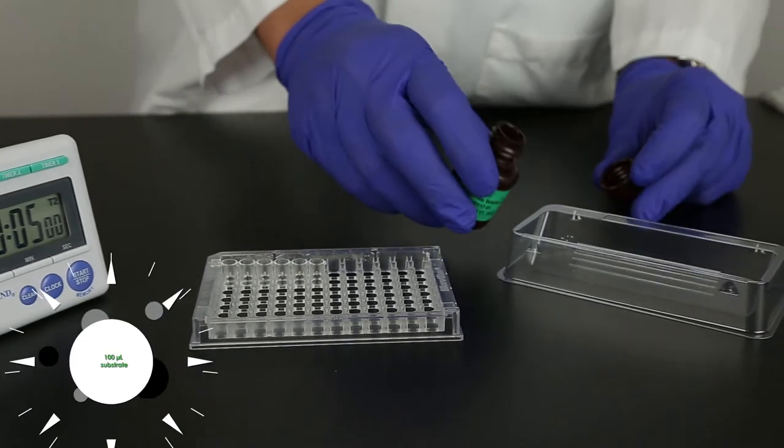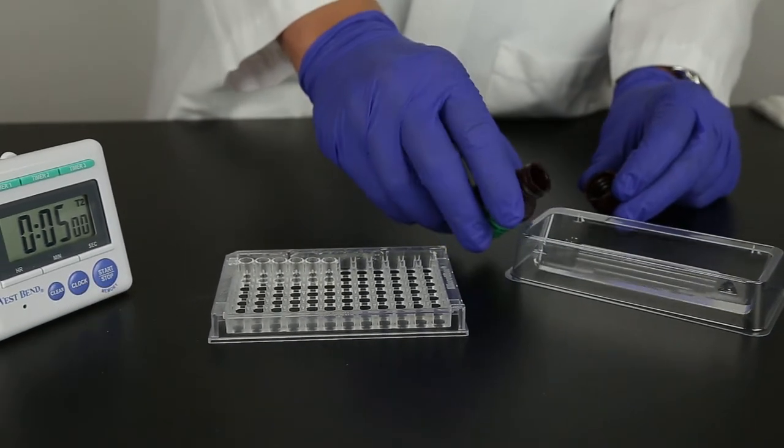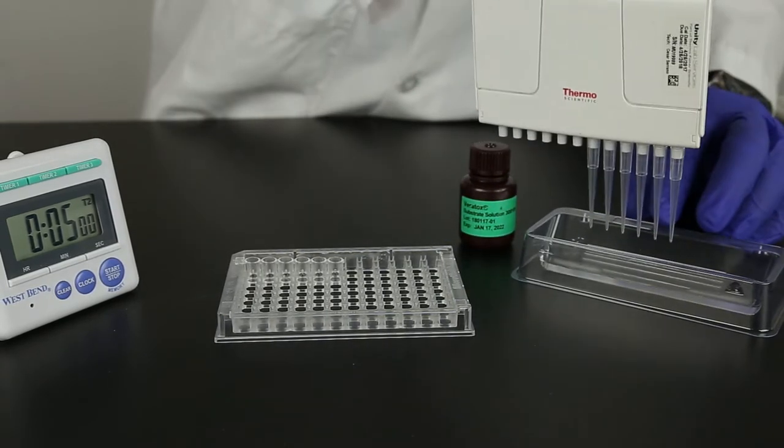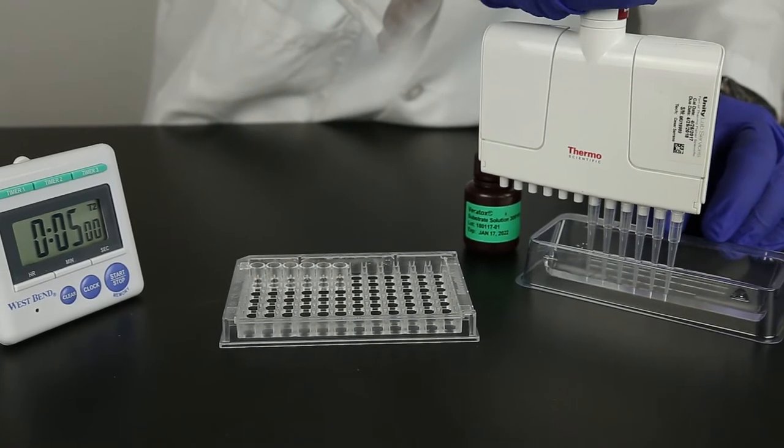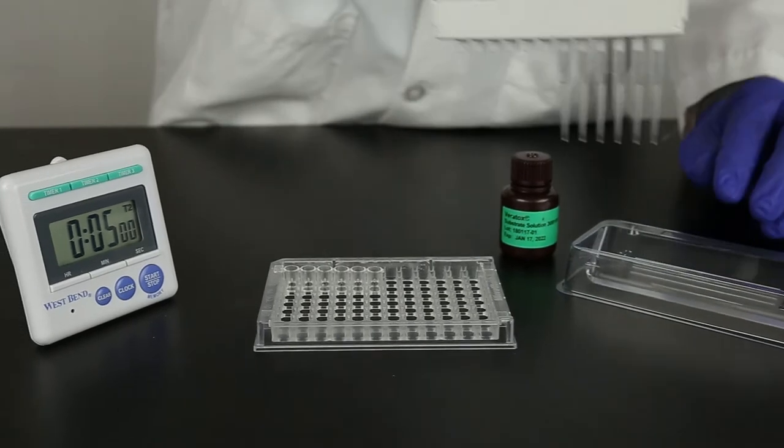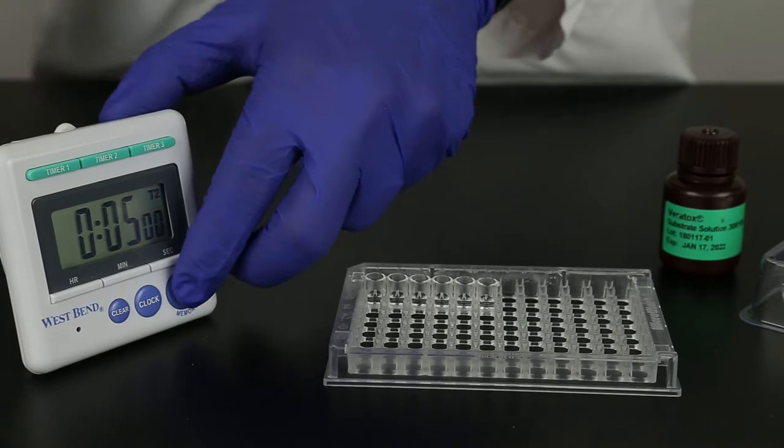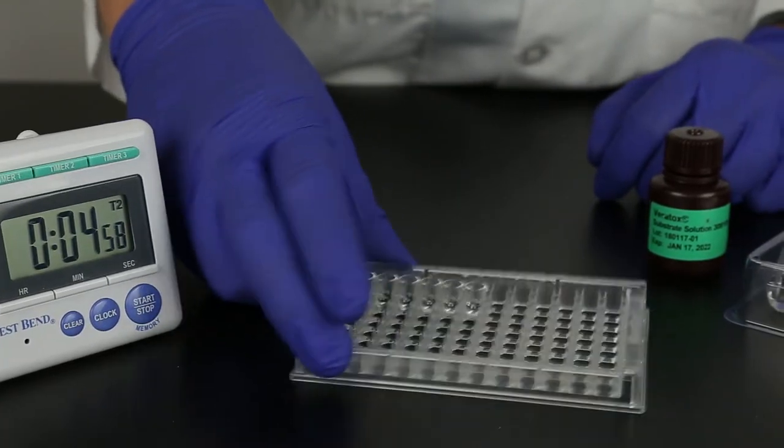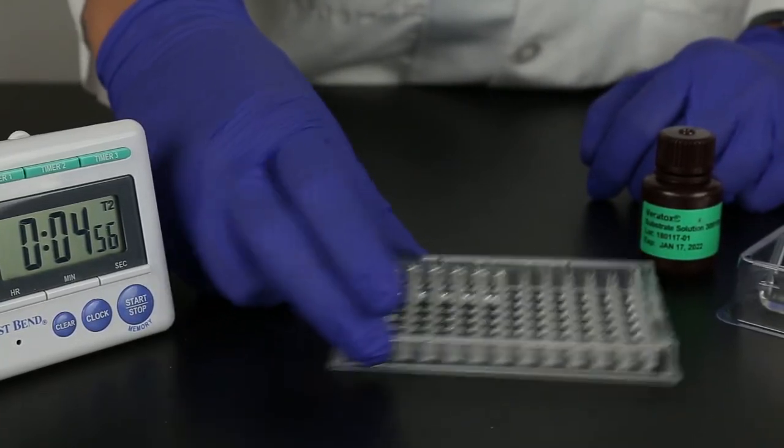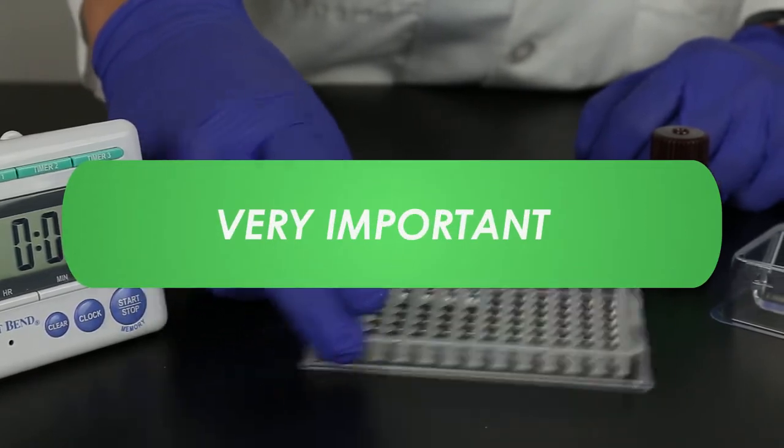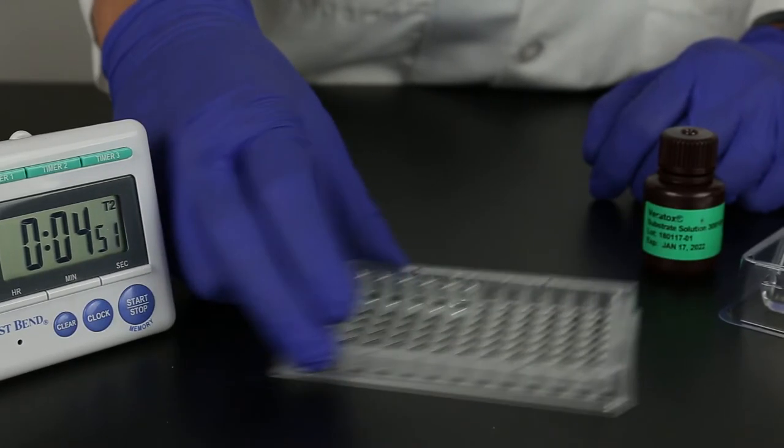Pour the needed volume of substrate from the green labeled bottle into a clean reagent boat. Using new tips on the 12 channel pipetter, prime and pipette 100 microliters of substrate into the clear microwells. Start a timer set for five minutes. During the first 30 seconds of the room temperature incubation, it is very important that you mix the wells vigorously by sliding the microwell holder back and forth on a flat surface without splashing the reagents from the well.